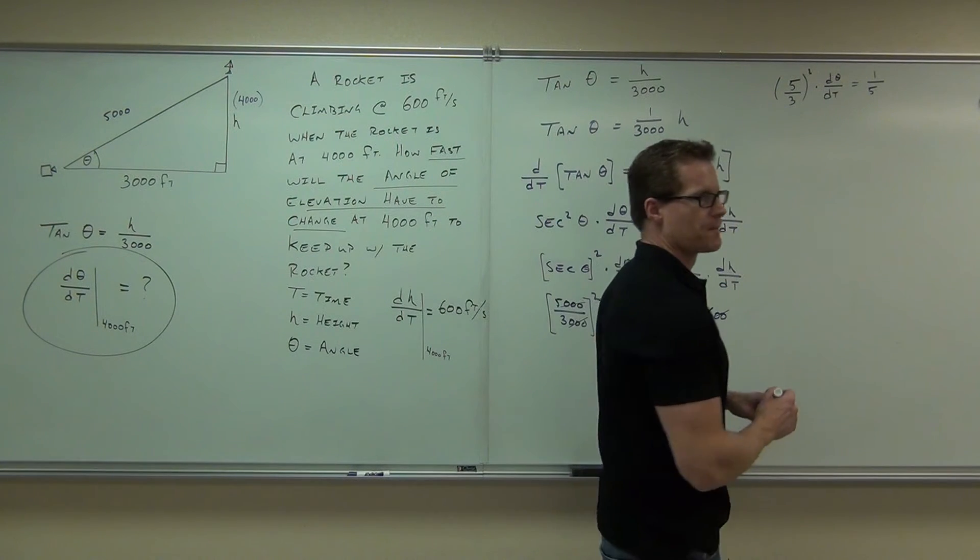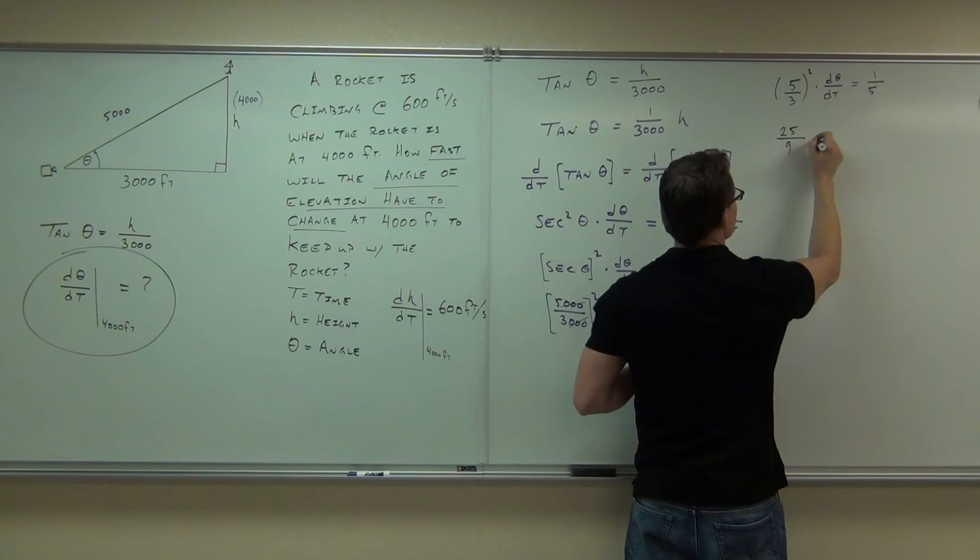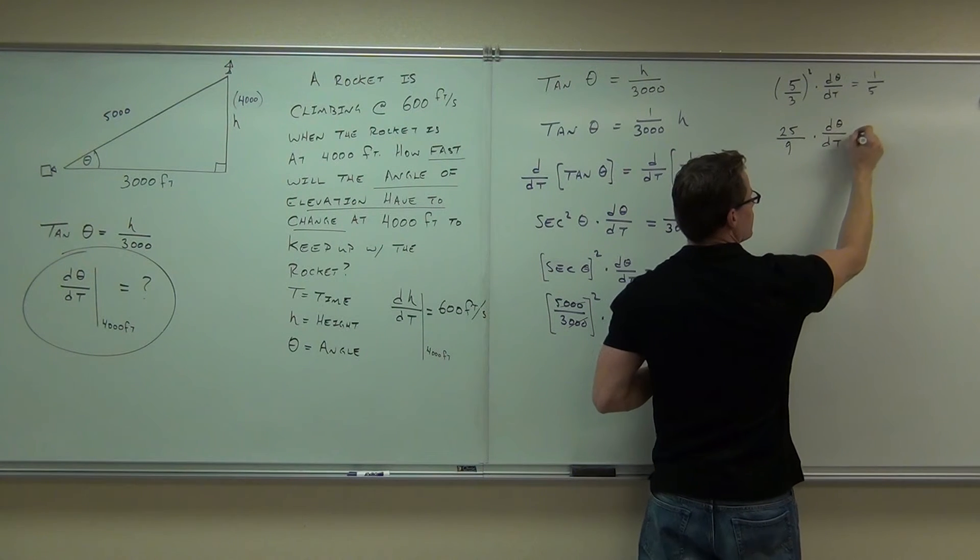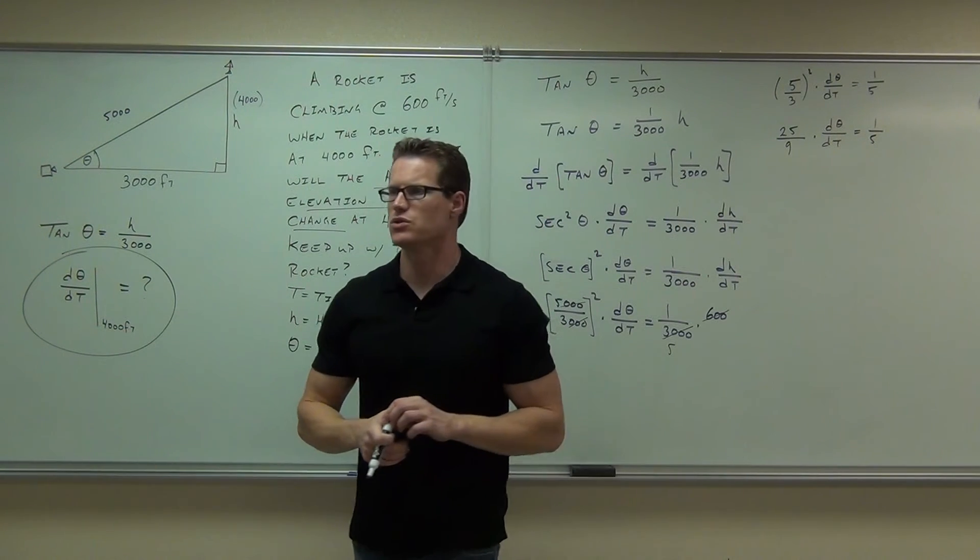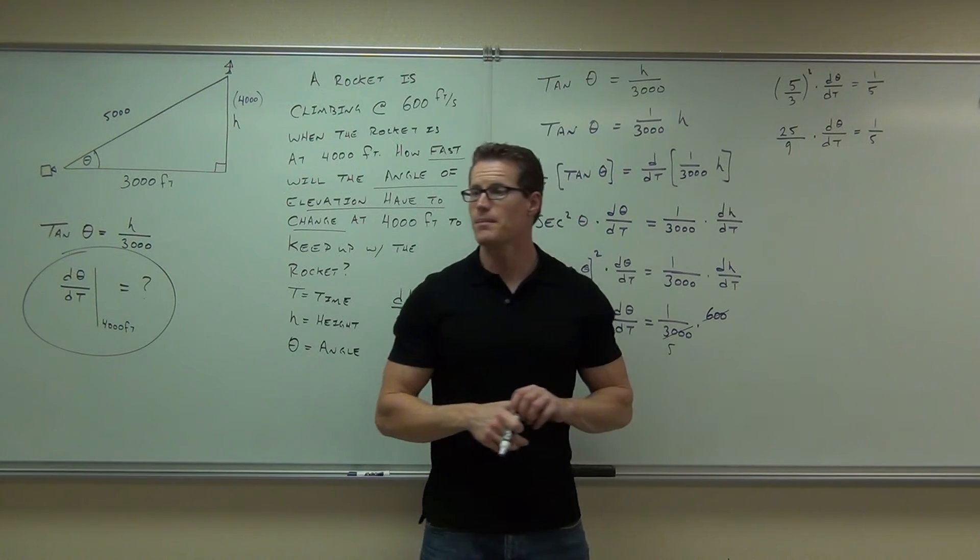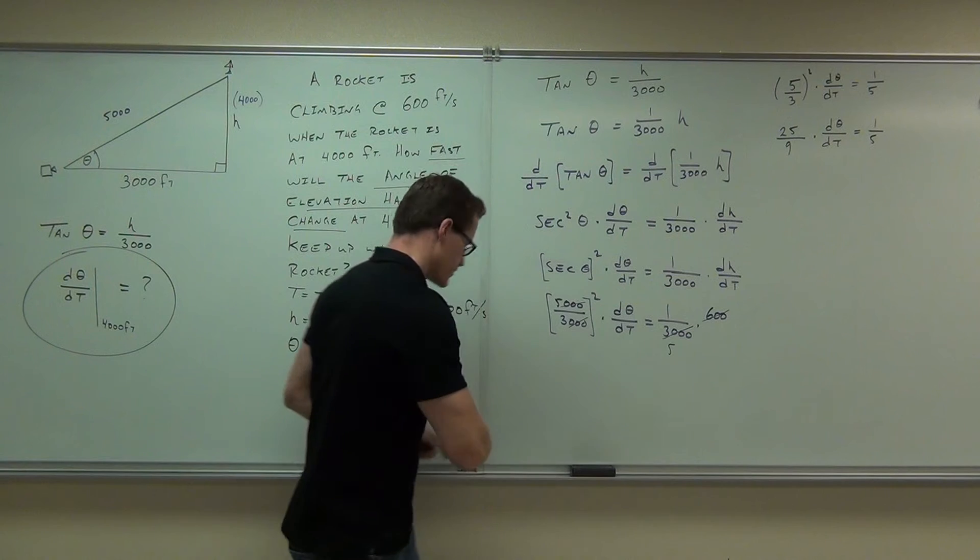Let's go ahead and square it. What are you going to get squared? 25 over 9 times d theta dt, which is what I'm looking for, equals 1 fifth. Let's get rid of 25 over 9. Multiply both sides. So if I multiply by 9 25ths on both sides.